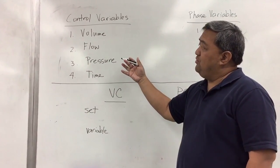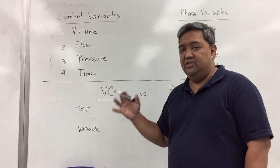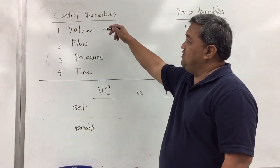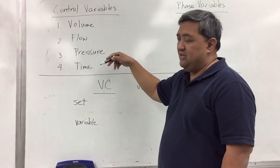The control variables is basically how is the breath delivered. There are four variables to that: first is volume, flow, pressure, and time.